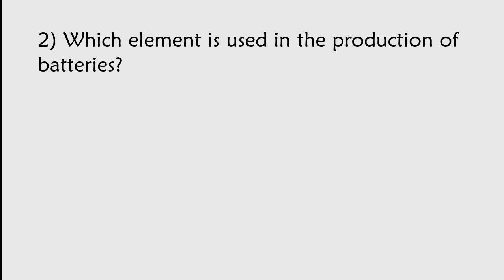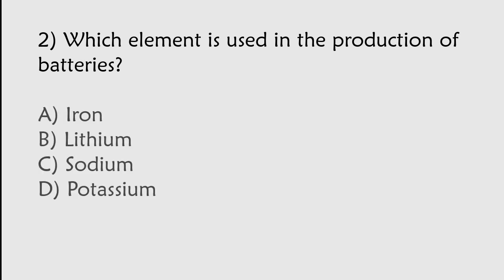Which element is used in the production of batteries? Iron, Lithium, Sodium, Potassium. The correct answer is option B. Lithium element is used in the production of batteries.